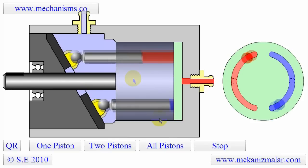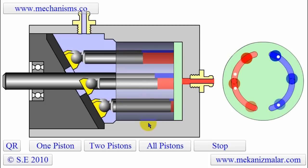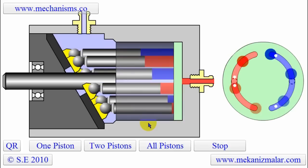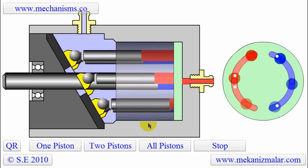And here are all the pistons working in harmony. In practice, the number of pistons are usually odd numbers, such as 7, 9, or 11. In this animation, we're using 6 pistons to make it easier to animate.